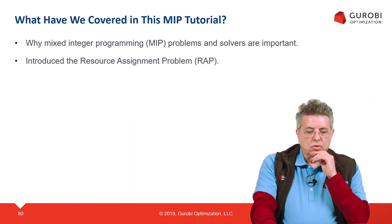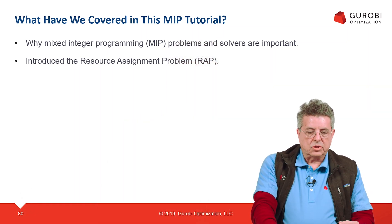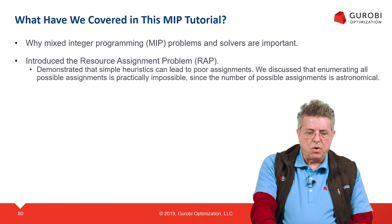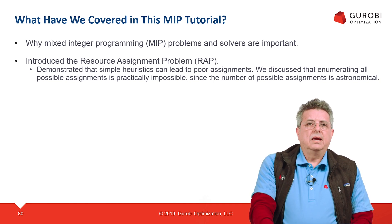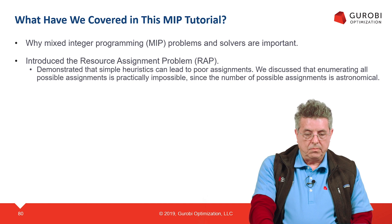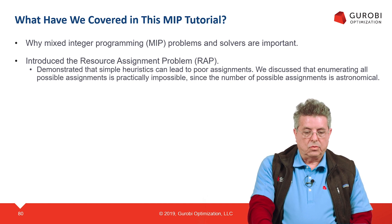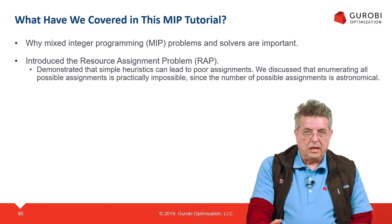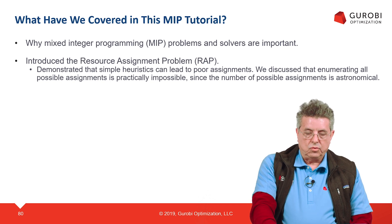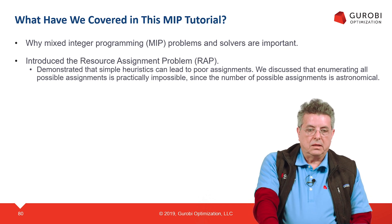We also introduced a problem — the resource assignment problem that we used to call the RAP problem. For this problem we showed that if you try simple heuristics, or try to enumerate all the possible assignments when solving the assignment problem, those approaches either give you poor assignments or produce an astronomical number of solutions, which is impractical to solve.